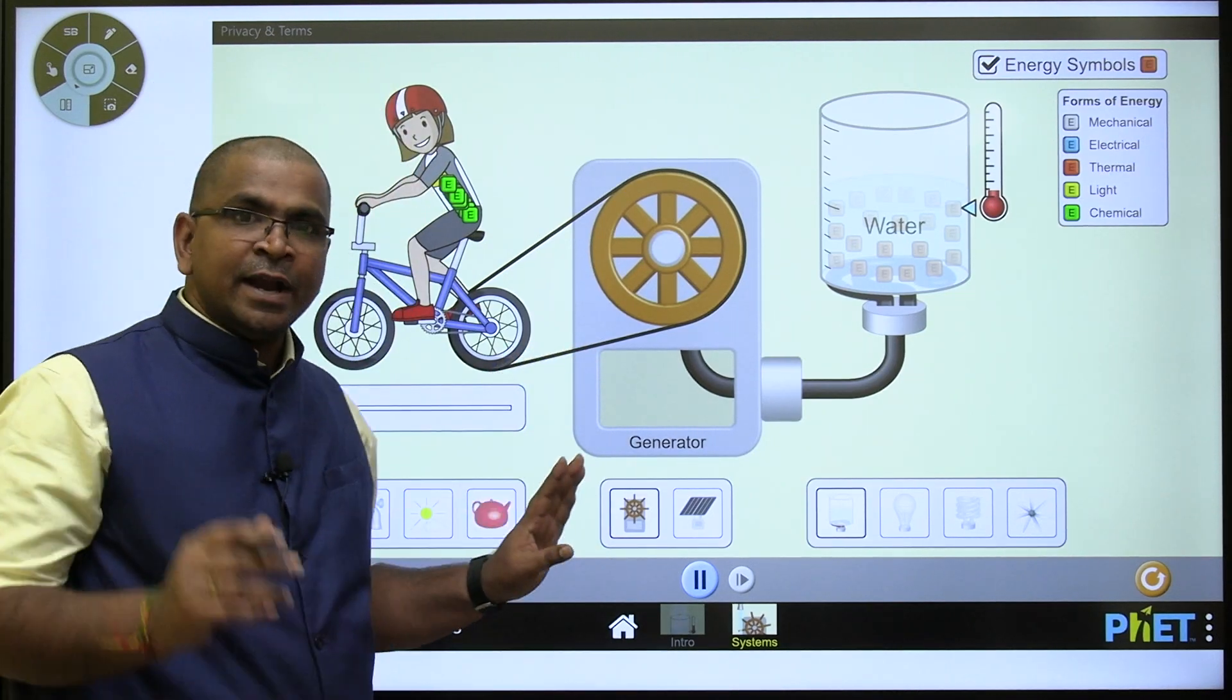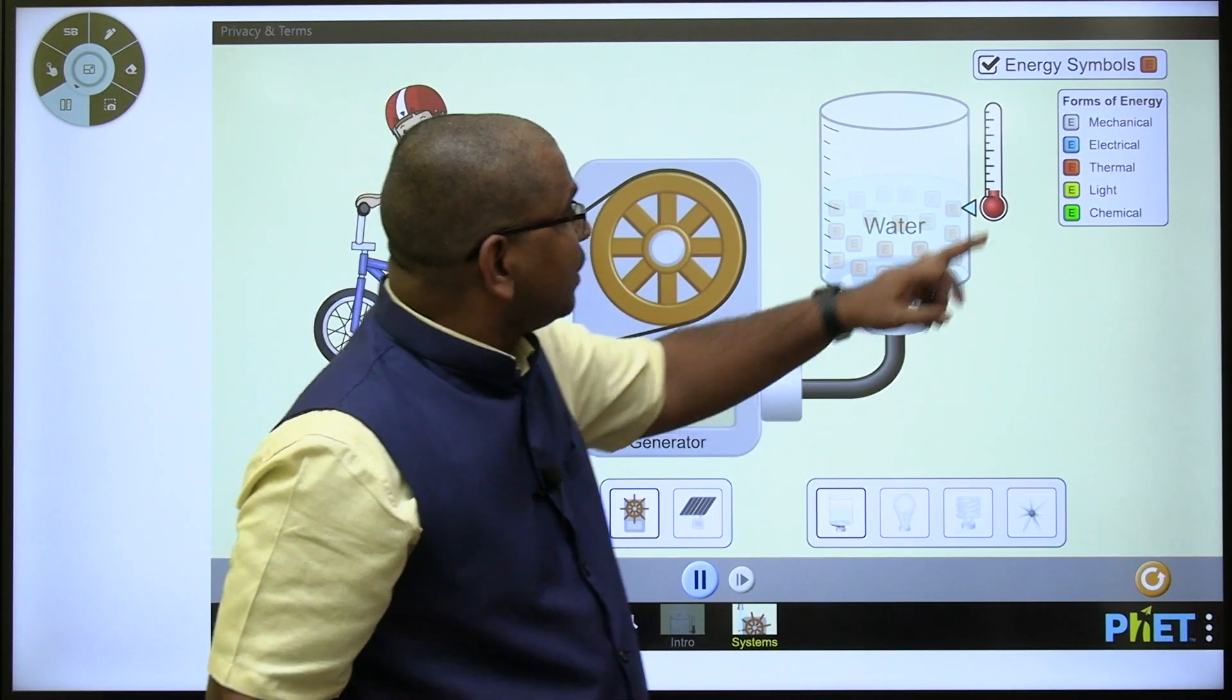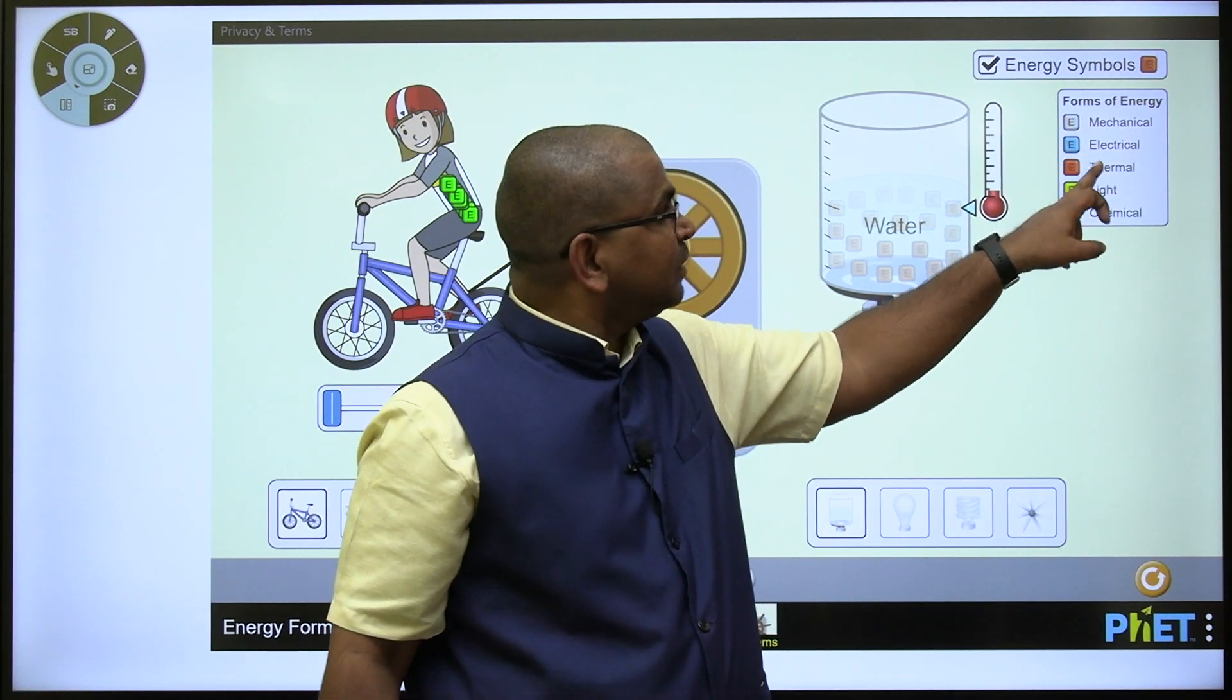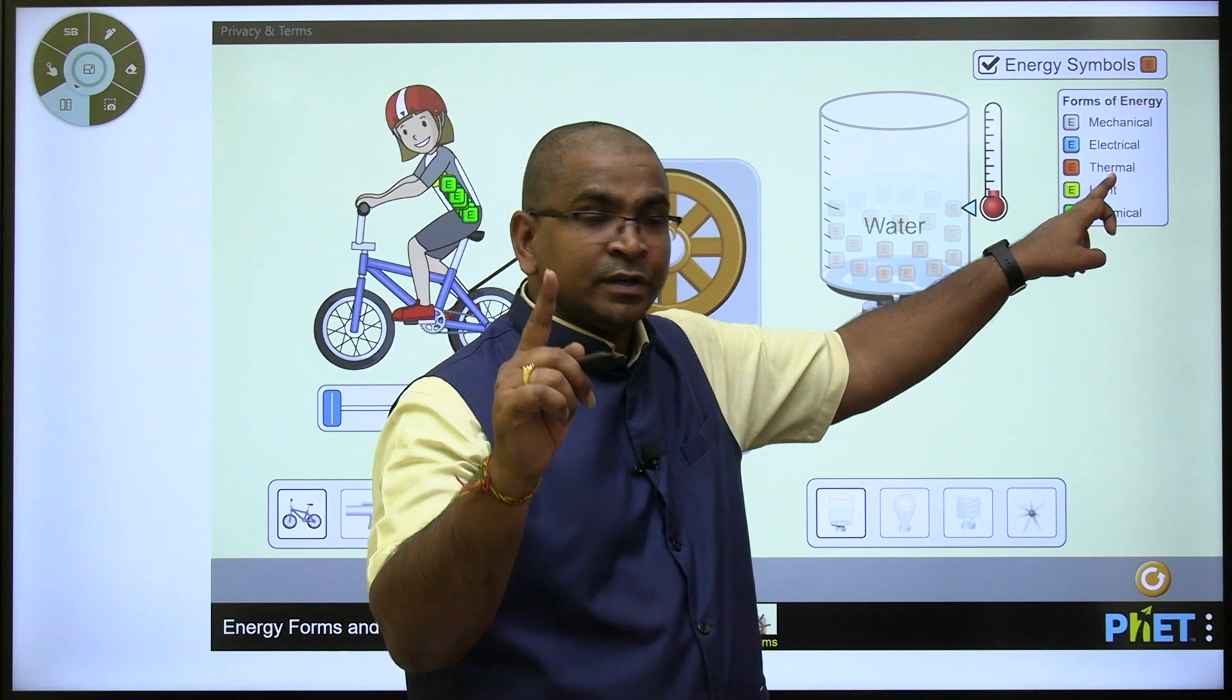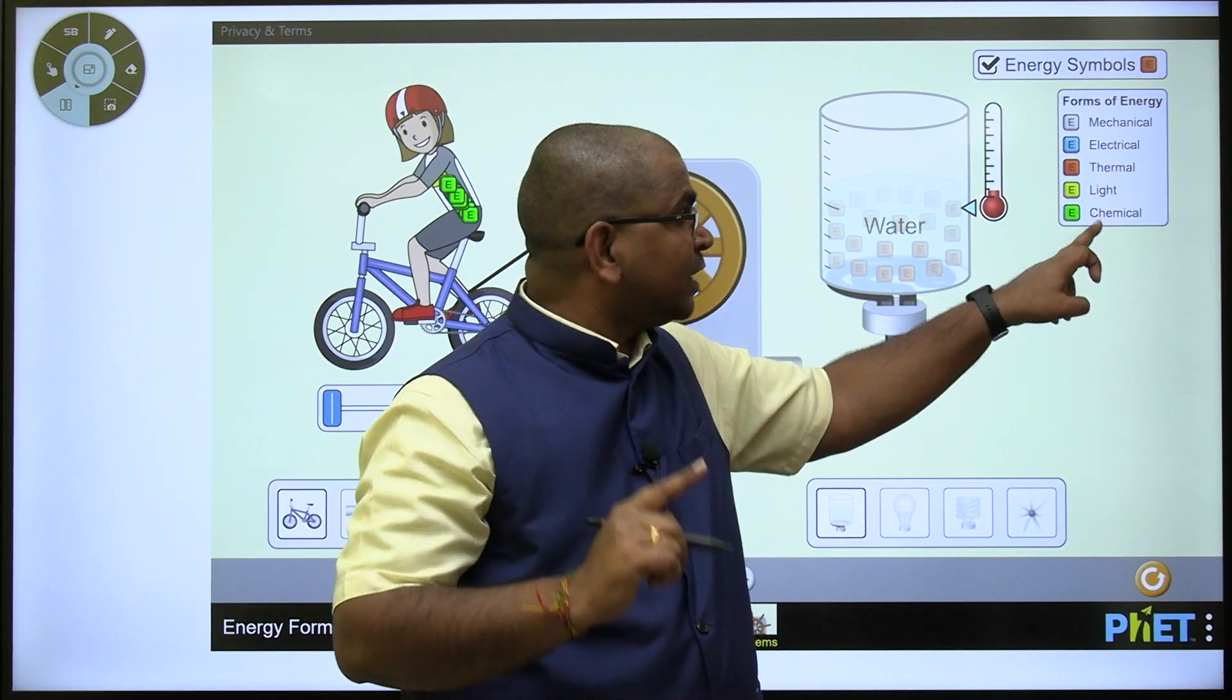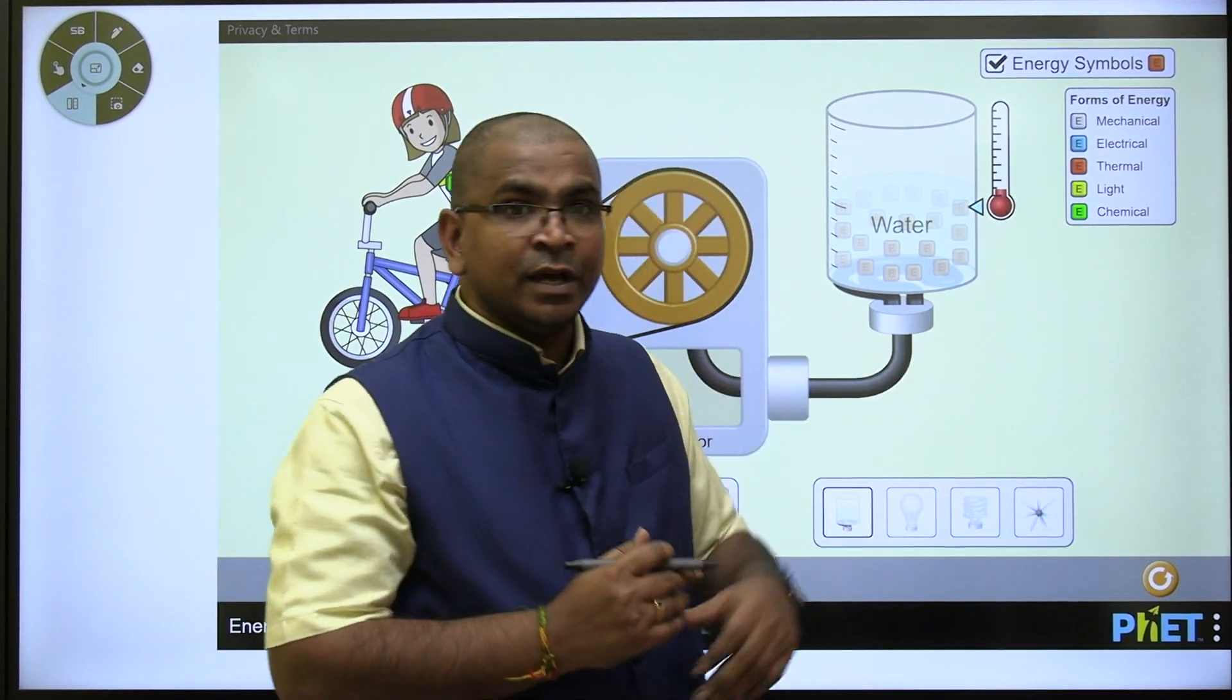Here let me give you an idea about what energies are available and the symbols. Mechanical energy with silver color, electrical energy with blue color, thermal energy with red color, light energy with yellow color, and chemical energy with green color.